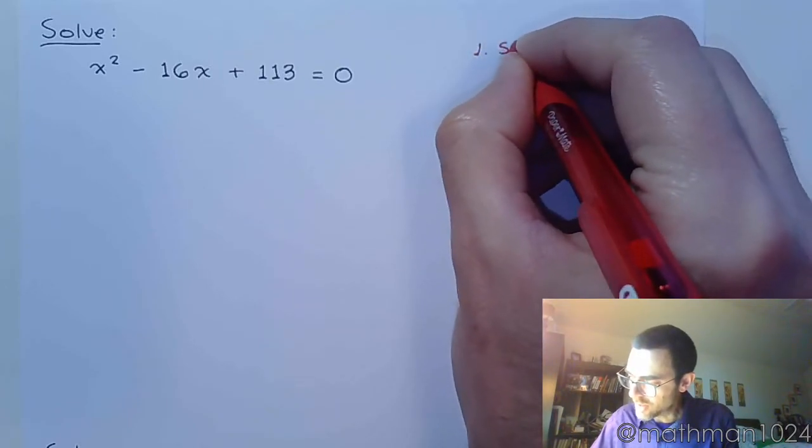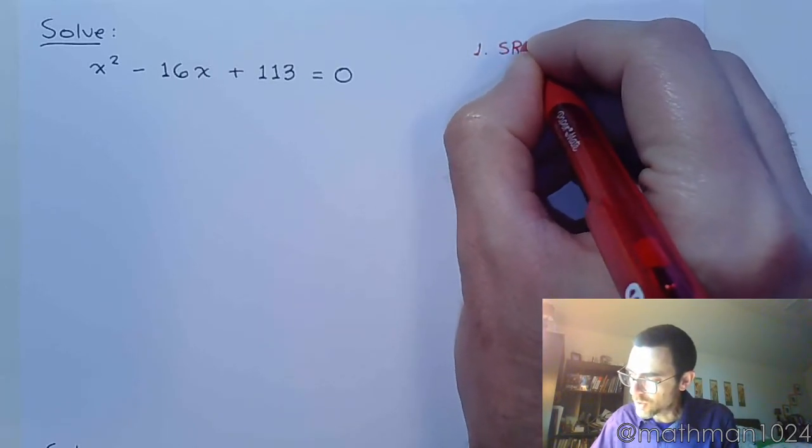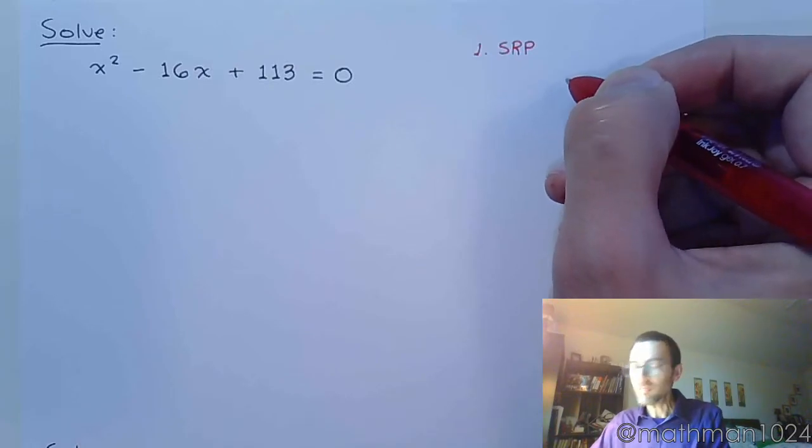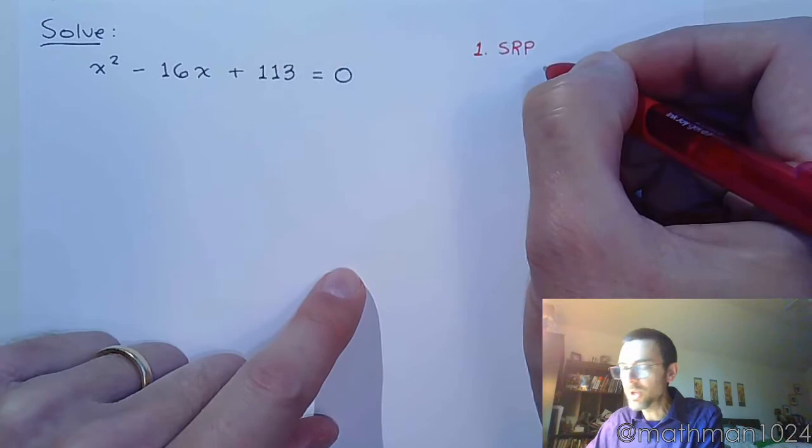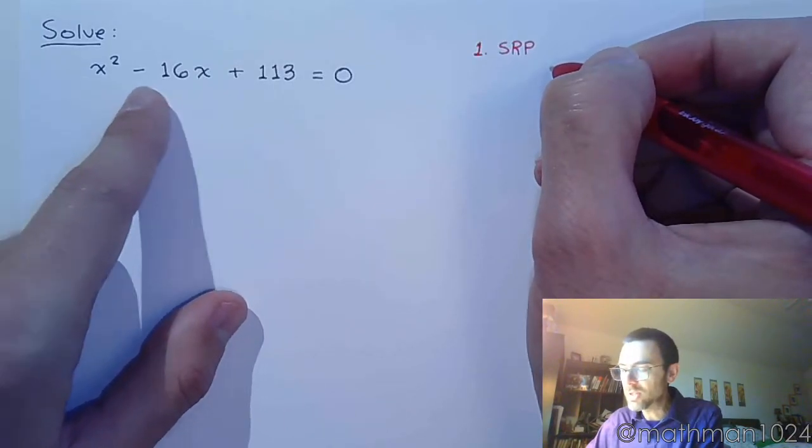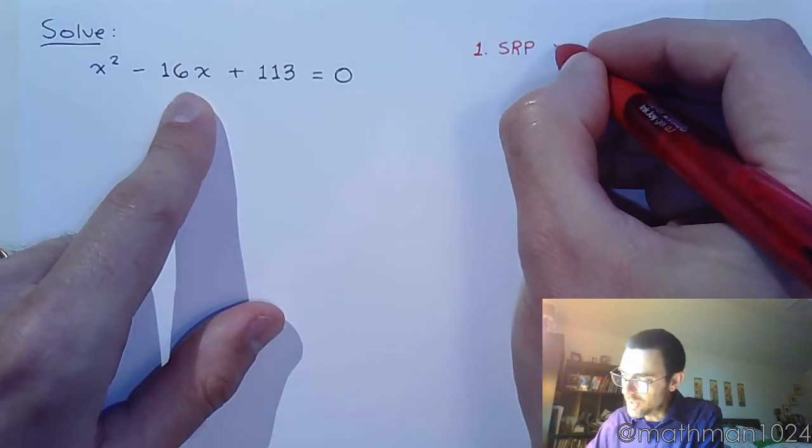So let's look at our progression. The first thing we try to do, we try to use the square root property. Unfortunately, in order to use the square root property, we can only have one instance of x, but I see two x terms, so this is no good.